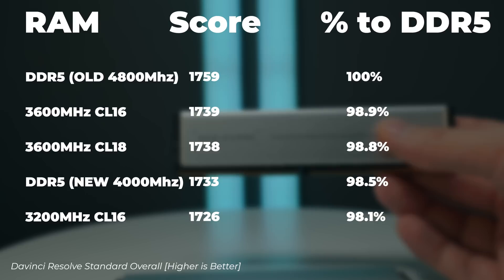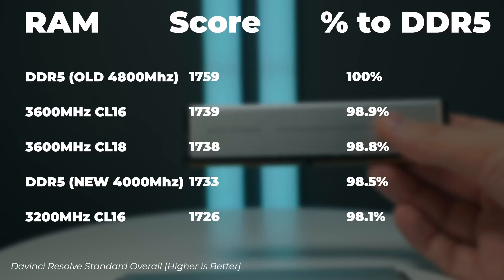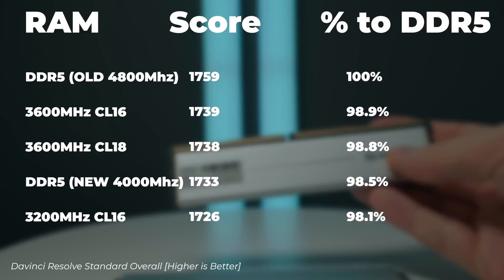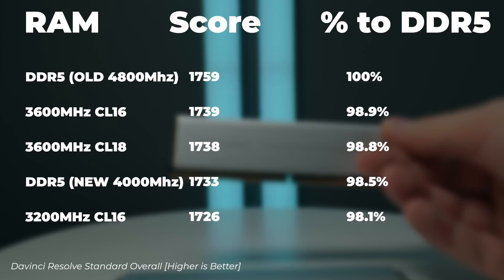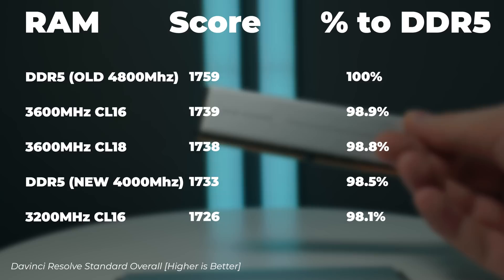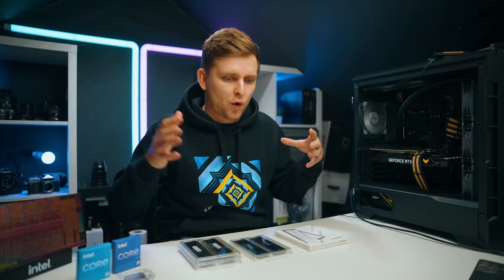An important note on DaVinci Resolve: the latest benchmark run was at no XMP, so the DDR5 was running at 4000MHz instead of 4800MHz, which could account for up to 5% performance loss. For Blender, all RAM configurations fall within the margin of error — there's no point distinguishing between them. As long as you have plenty of RAM for Blender, you're fine.